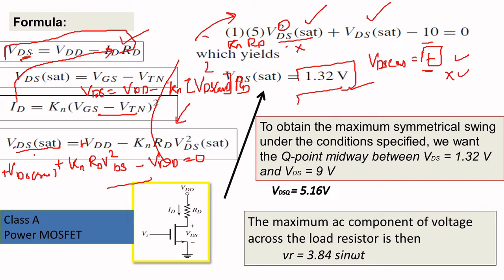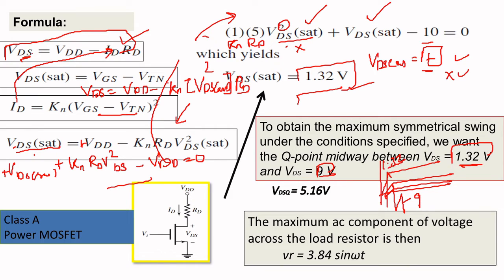Now you want to find that VDS saturation is 1.32, which you have determined. The maximum of 9 is already given in the problem. So your swing range is determined: the lower bound is 1.32 and the upper bound is 9. Now I want to find this center point.